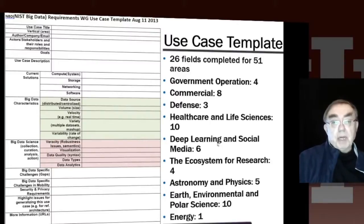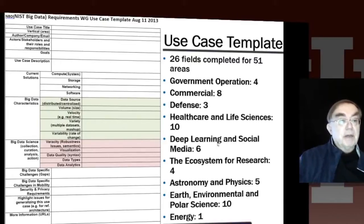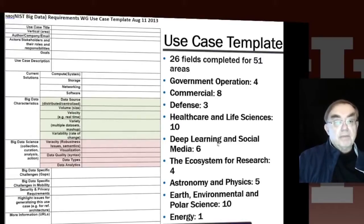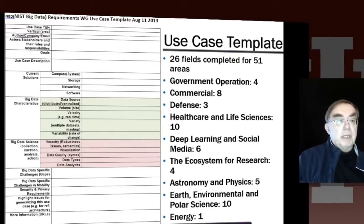A key part — maybe the major contribution to knowledge — of the whole use case working group was the development of the one-page Word document which was a use case template. The empty template was one page; the full templates could be many pages. This defines what we collect for each use case.